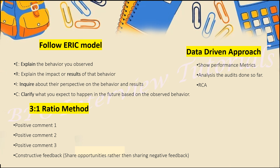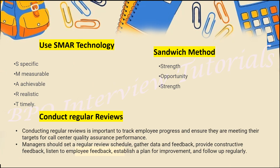You can also use the three-to-one ratio method. In this method, you first go with a positive comment, then another positive comment, then a third positive comment. When you lead with more positive comments, the employee gets the impression that they've done many things right. Then when you go with the constructive feedback, the employee is more likely to accept the mistake — recognizing that 80 percent of the interaction was good, and only 20 percent had an opportunity for improvement. You tell more positive points first, then move to the opportunity point.